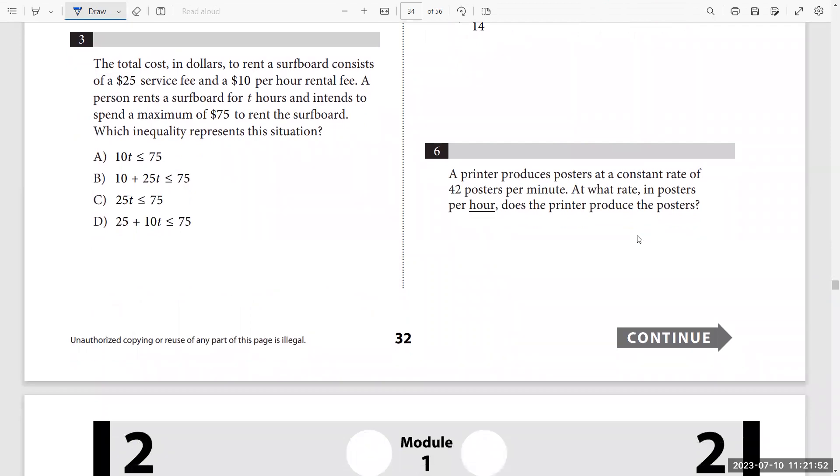Question three. The total cost in dollars to rent a surfboard consists of $25 service fee plus $10 per hour rental fee. A person rent a surfboard for T hours and intended to spend the maximum $75. So this amount is maximum $75, means the $75 is bigger than this amount, or this amount is smaller than $75. This is an inequality represented in this situation. So $25 plus $10T less than or equal to $75.